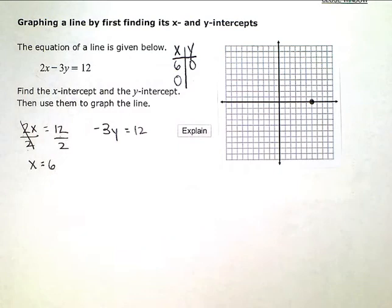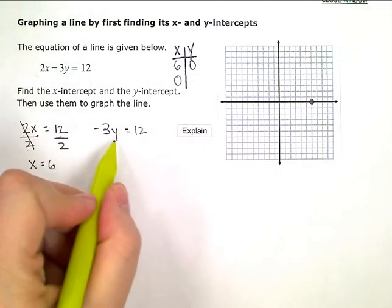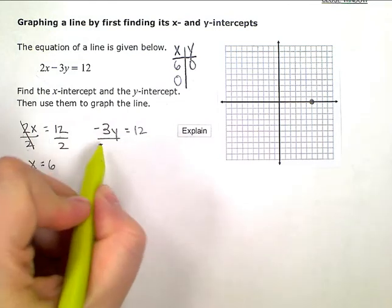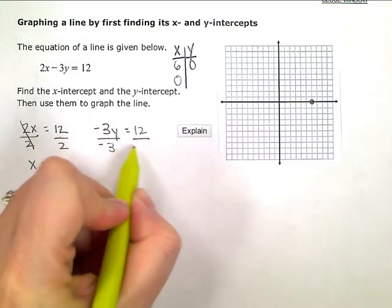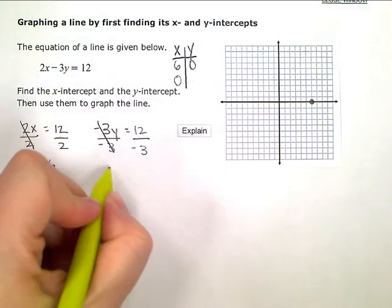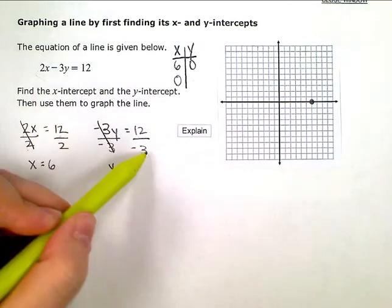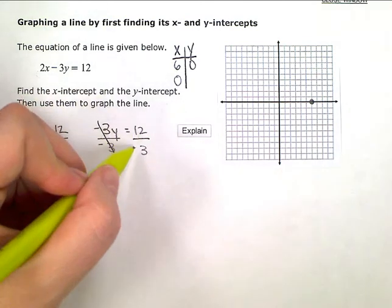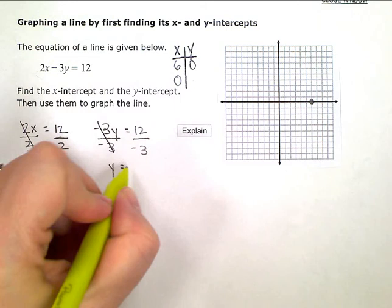You can solve this in your head if you can—negative 3 times what number gives 12? Or you can divide out the coefficient on both sides and simplify: y = 12 ÷ (-3), or -4.